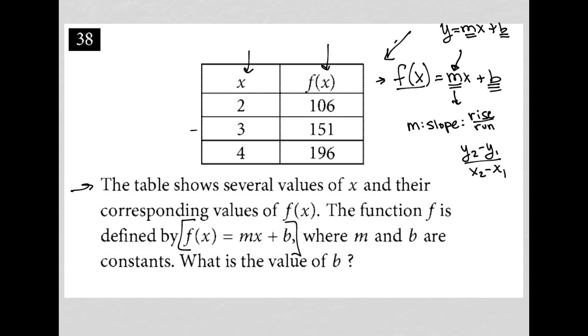So if I focus my attention on the first two ordered pairs, 2, 106 and 3, 151, I can say that this is an x1 and this is an x2, and this is a y1 and this is a y2. So this would lead me to have 151 minus 106 over 3 minus 2. 151 minus 106 is 45. This becomes 45. 3 minus 2 is just 1. So my slope m is equal to 45.